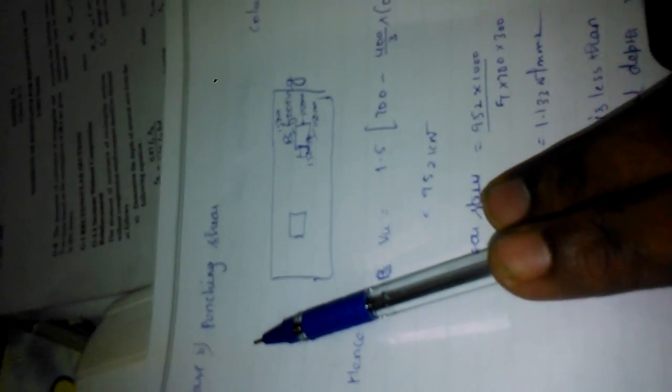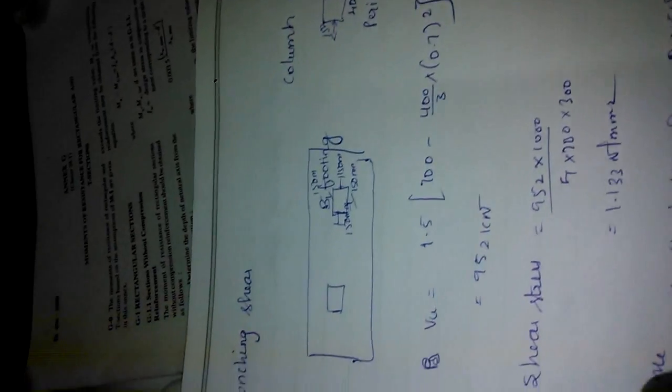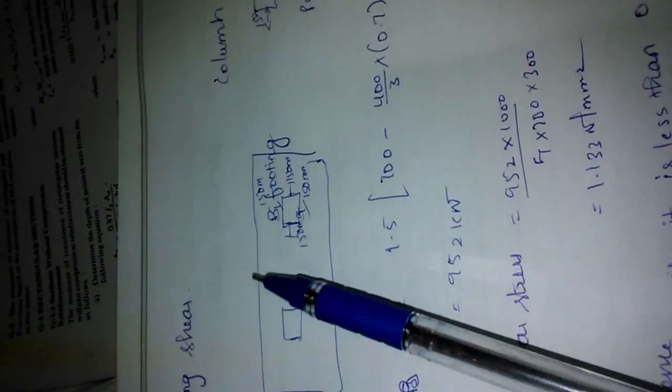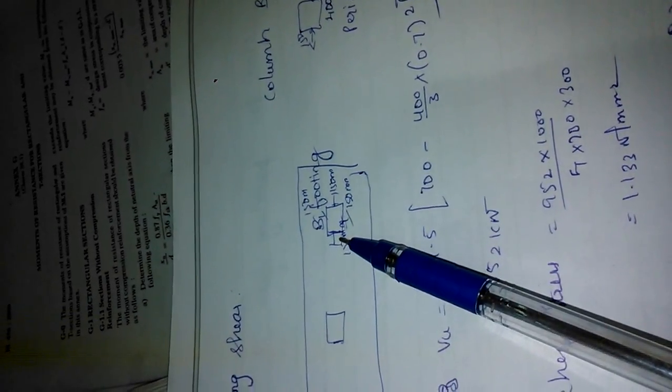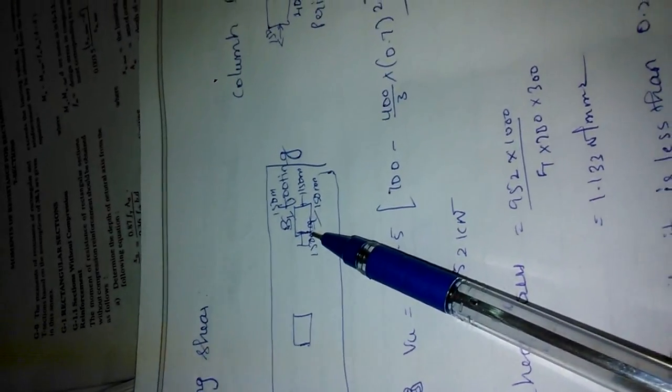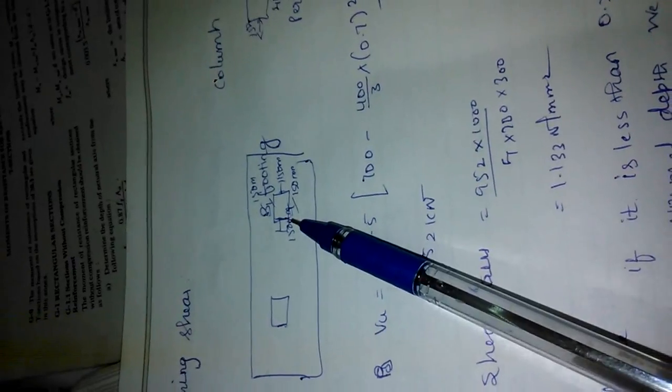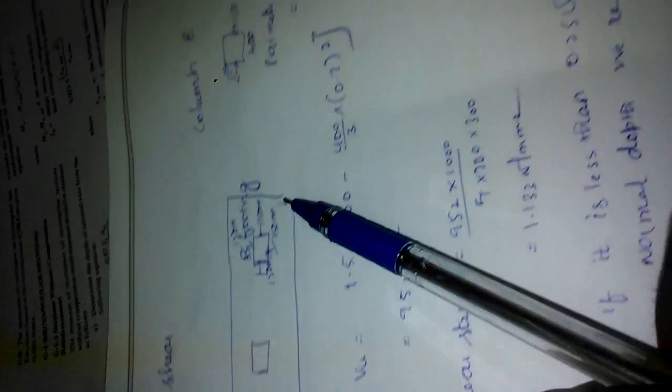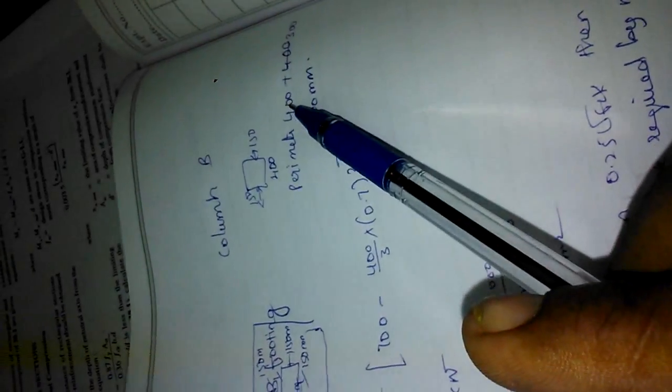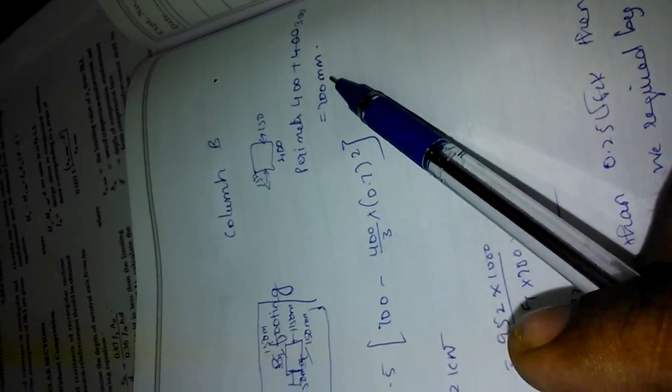The punching shear is the shear force we are going to find at distance of D divided by 2. As per the diagram this is at depth D divided by 2 from the outer side of this column. The depth we found is 300 mm. So the depth of 300 mm is divided by 2, we got 150 mm at each side. So the perimeter is 700 mm by 400. Because 400 is the size plus 150 plus 150. So 400 plus 300 becomes 700 mm.